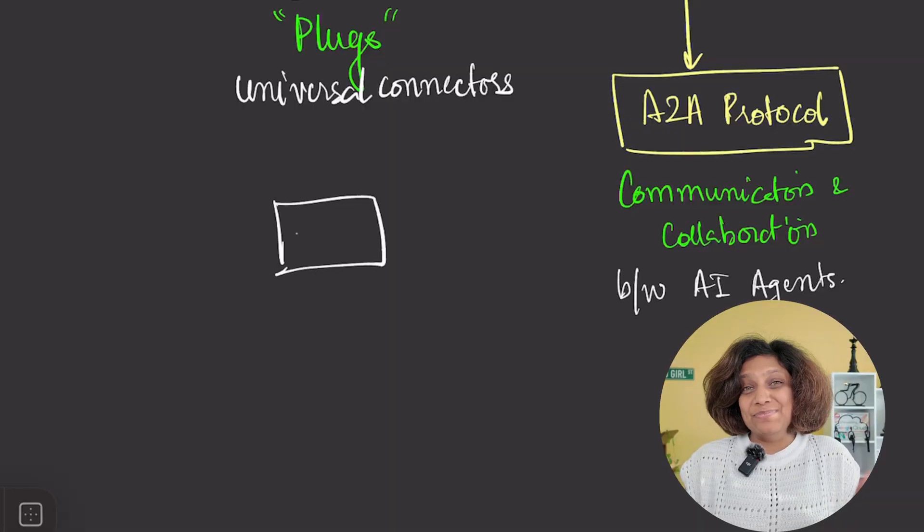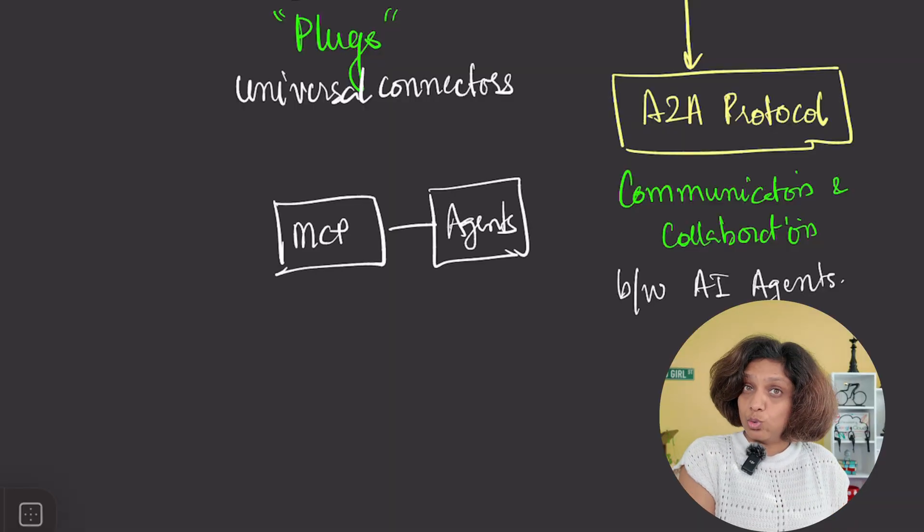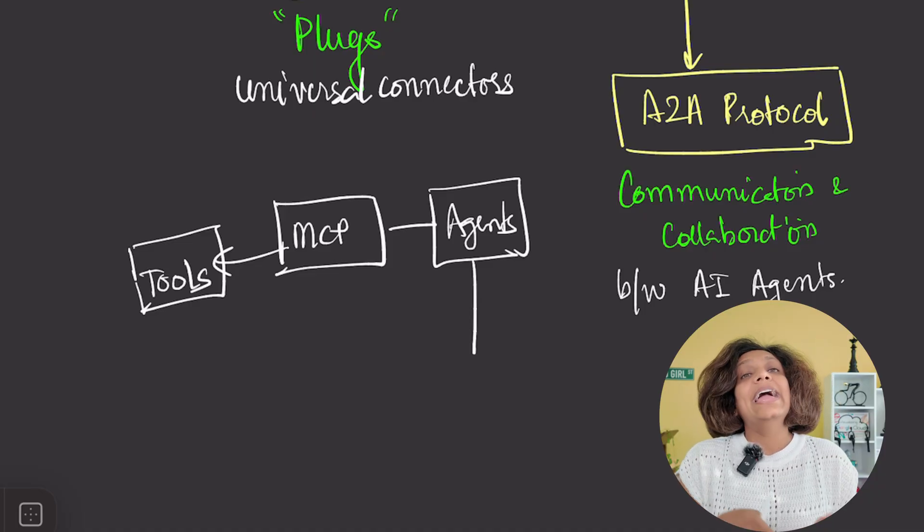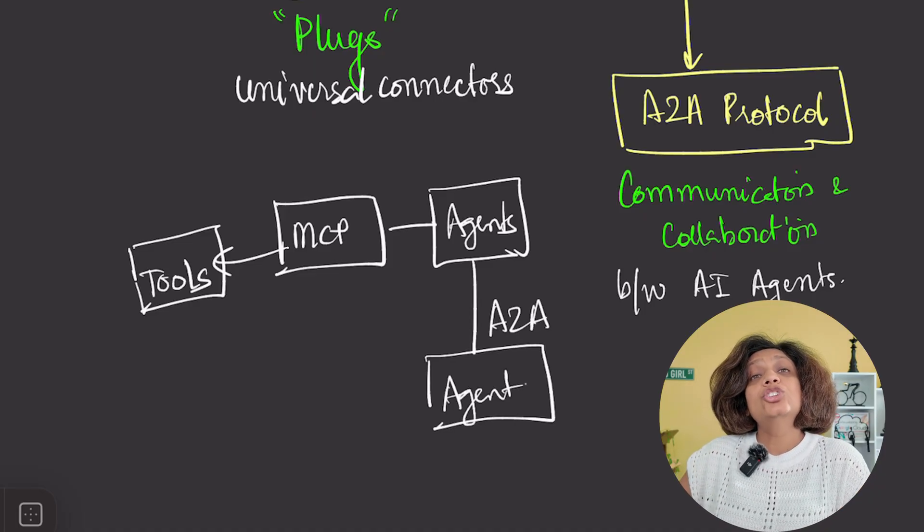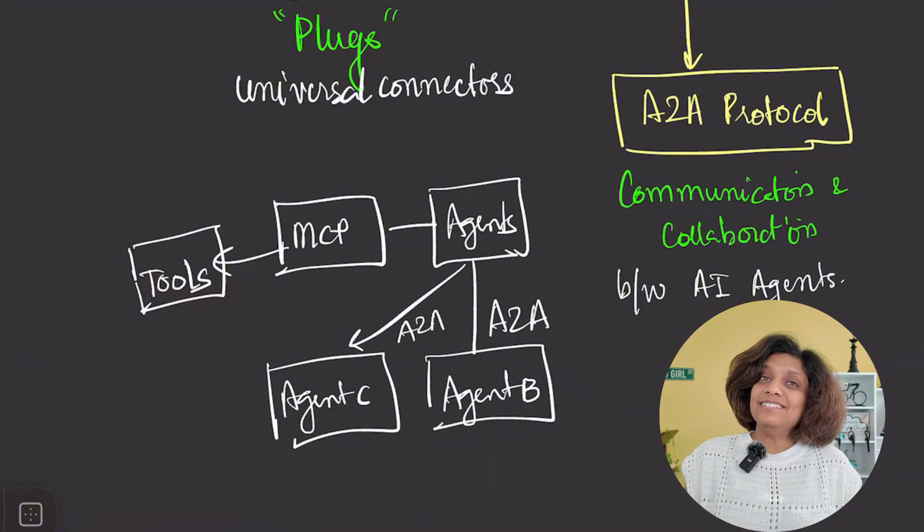Here's the key insight. These protocols are complementary, not competing. MCP connects agents to tools and data sources. A to A connects agents to each other. Together, they create a powerful interconnected AI ecosystem.